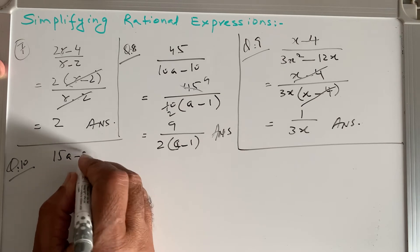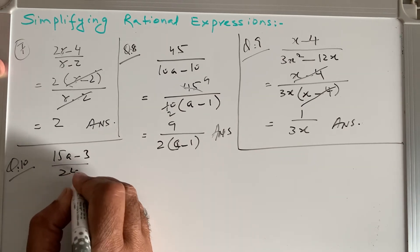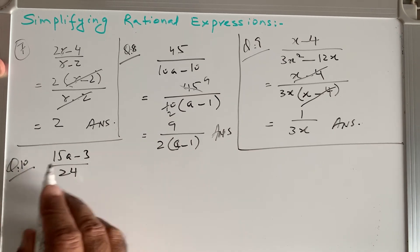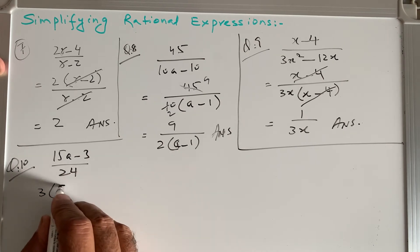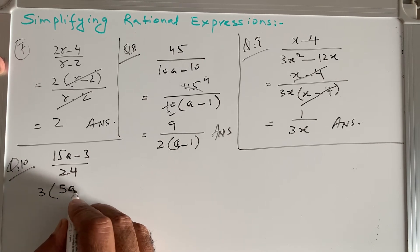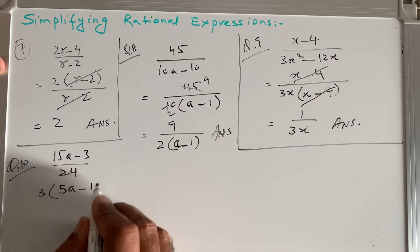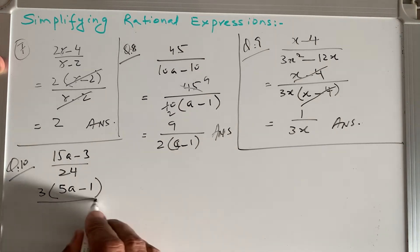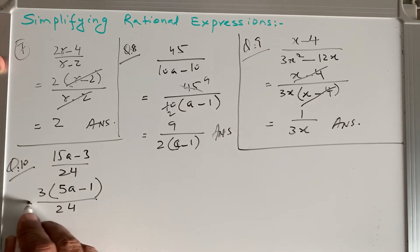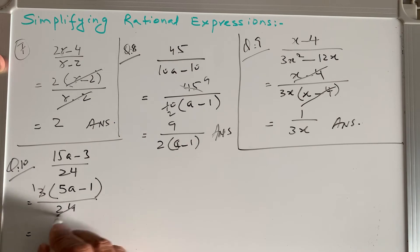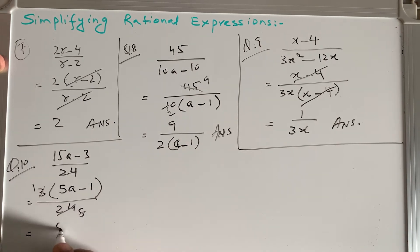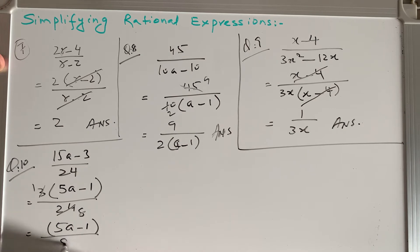Question 10: (15a - 3) / 24. In the numerator, 3 is the common factor: 3(5a - 1). Three 1s are 3 and three 8s are 24, so 3 and 24 simplify. The answer is (5a - 1) / 8.